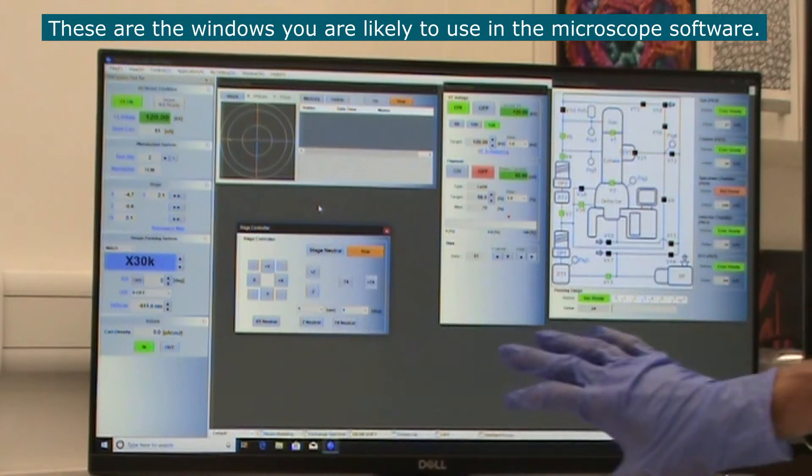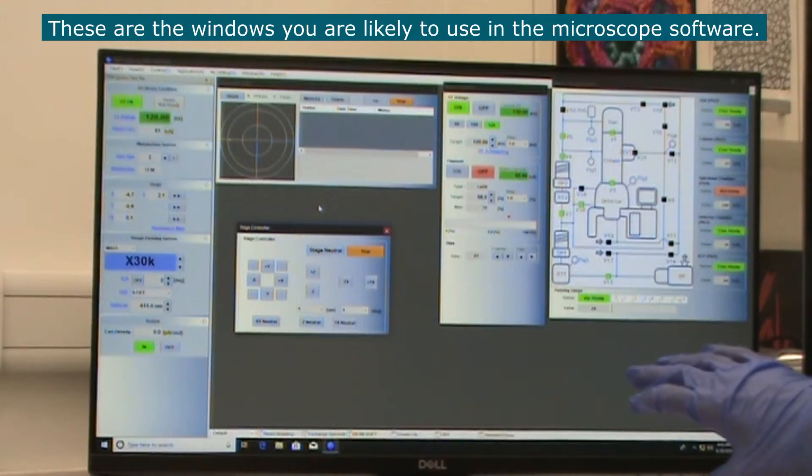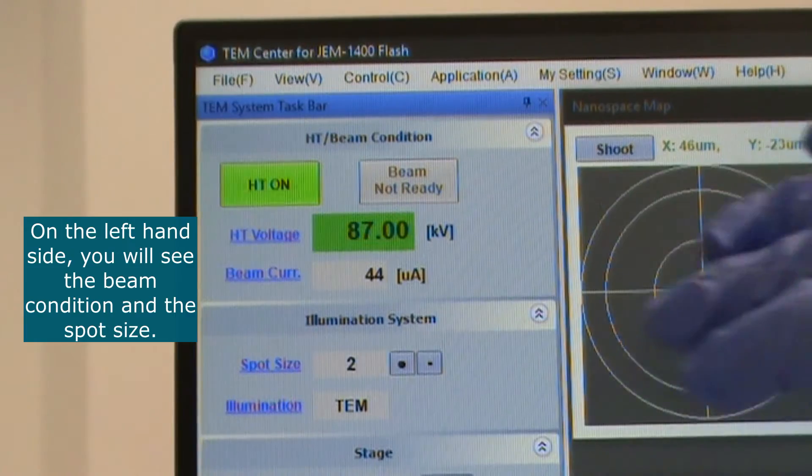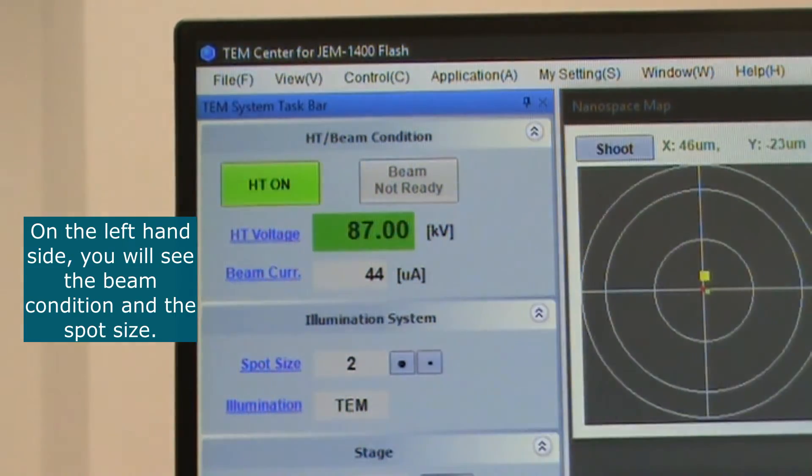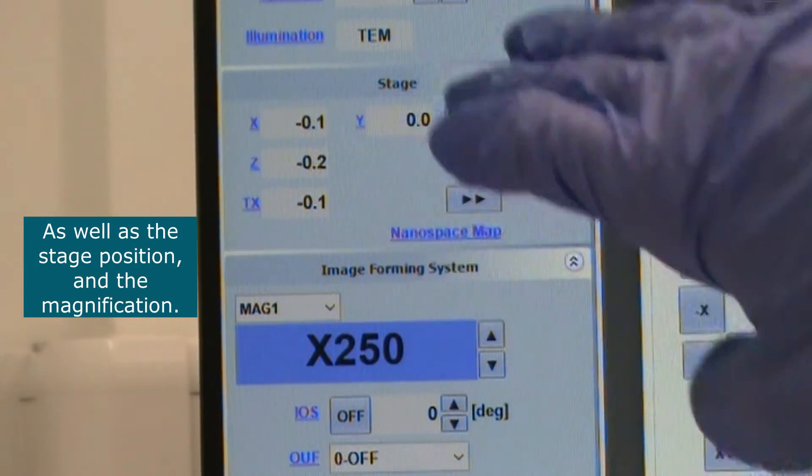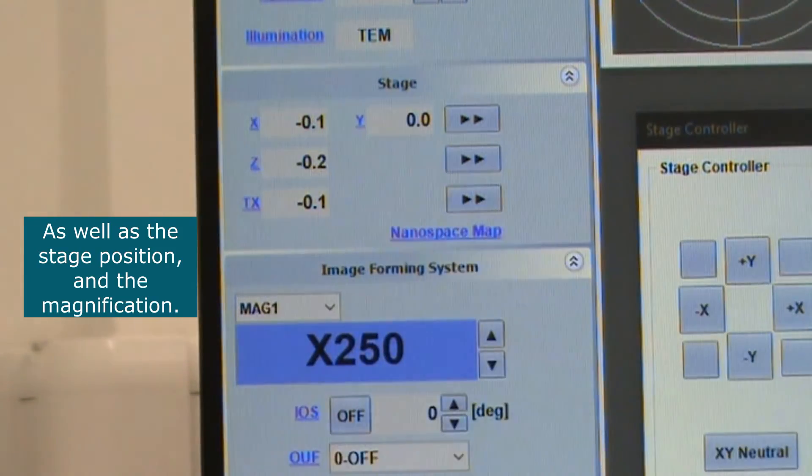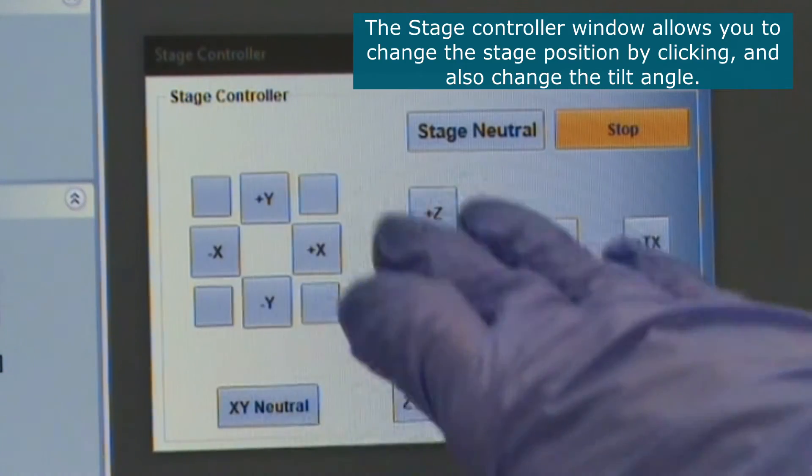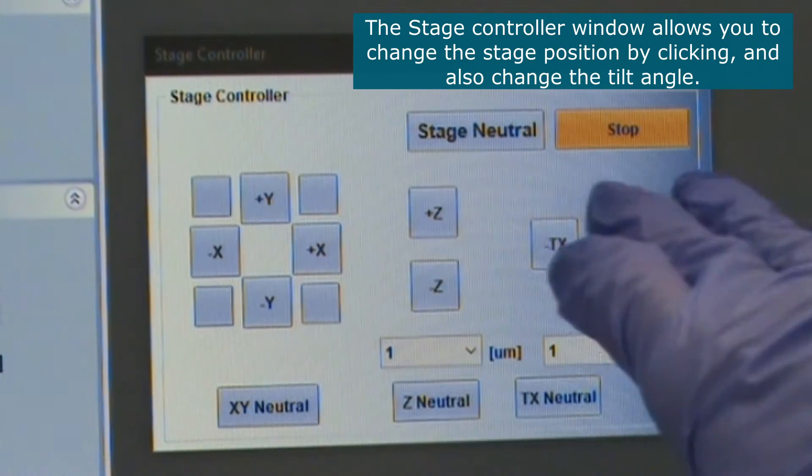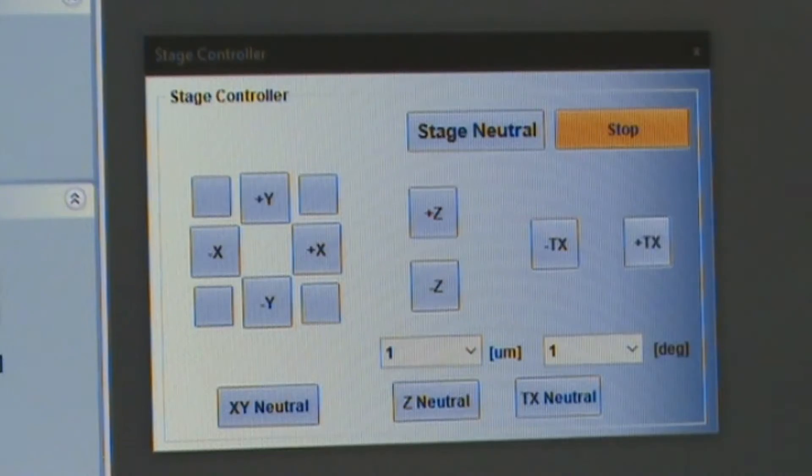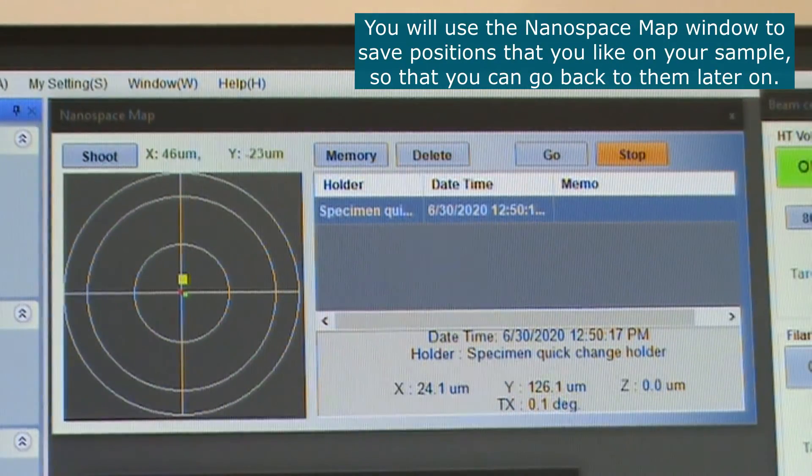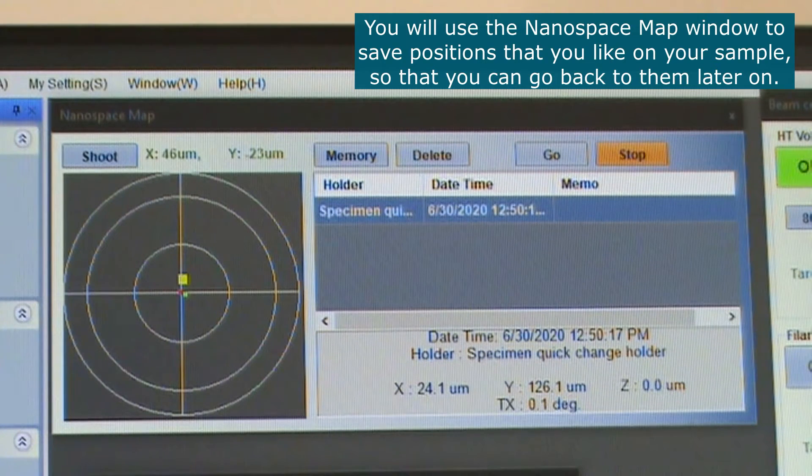These are the windows that you are likely to use in the microscope software. On the left hand side you will see the beam condition and the spot size as well as the stage position and the magnification. The stage controller window allows you to change the stage position by clicking and also change the tilt angle. You will use the nanospace map window to save positions that you like in your sample so that you can then go back to these positions later on.